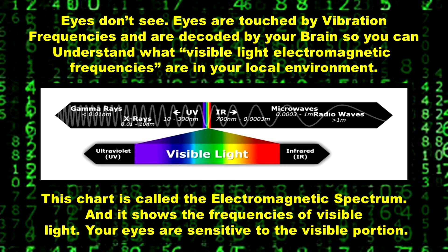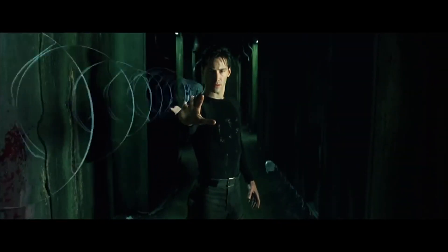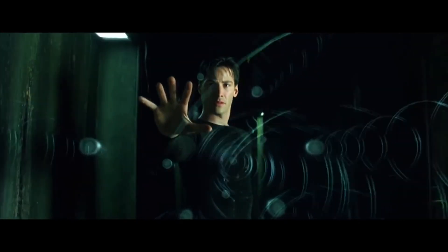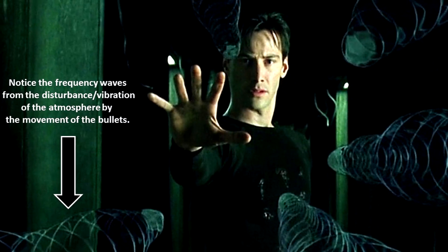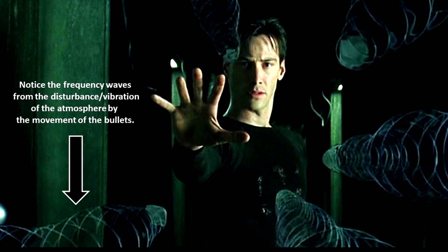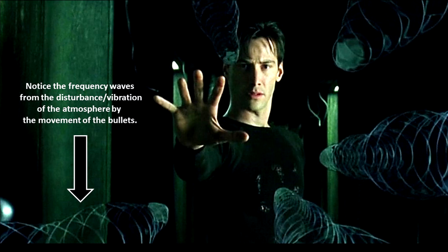This chart is called the electromagnetic spectrum and it shows the frequencies of visible light. Your eyes are sensitive to the visible light portion. Did you see the vibration waves coming from the bullets as they move towards Neo? And if you notice that, you can also notice the decoding.